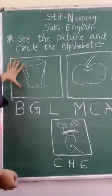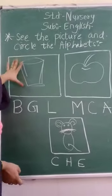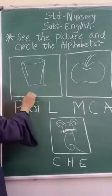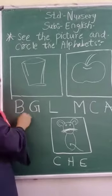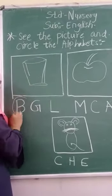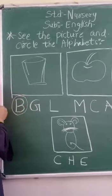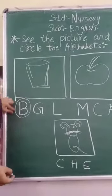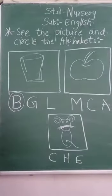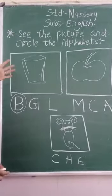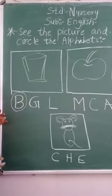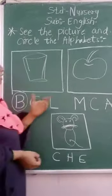Which picture is this? Bucket. Bucket comes from B. You have to circle Bucket. B for Bucket. This also covers B for Ball, B for Bucket, B for Bag. Now see the next one.